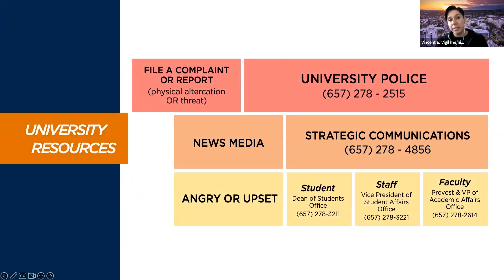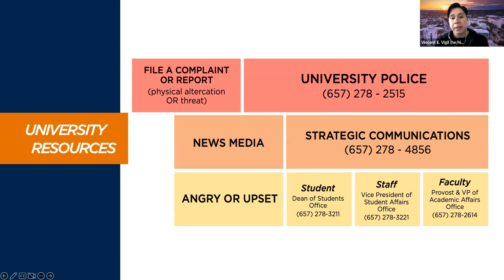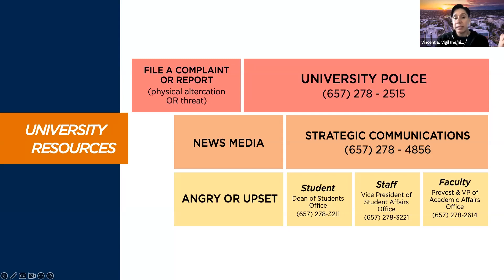Here are some university resources when it comes to providing support. If there's a physical altercation or threat, people can file a report with university police. When it comes to news media — we often get protesters who bring news coverage — as a student, you don't need to feel pressured to comment; you can always direct them to strategic communications. If there's anyone who is angry or upset and they're a student, they can call the Dean of Students office. If it's a staff member, they can call Student Affairs. If it's faculty, they can call the provost's office.